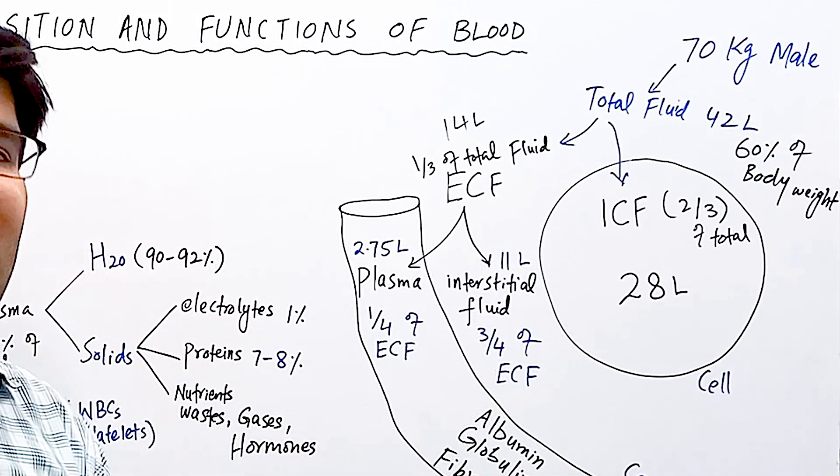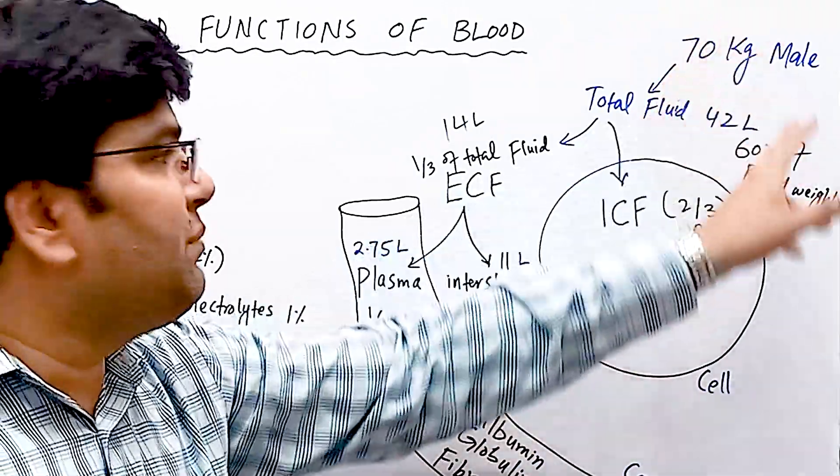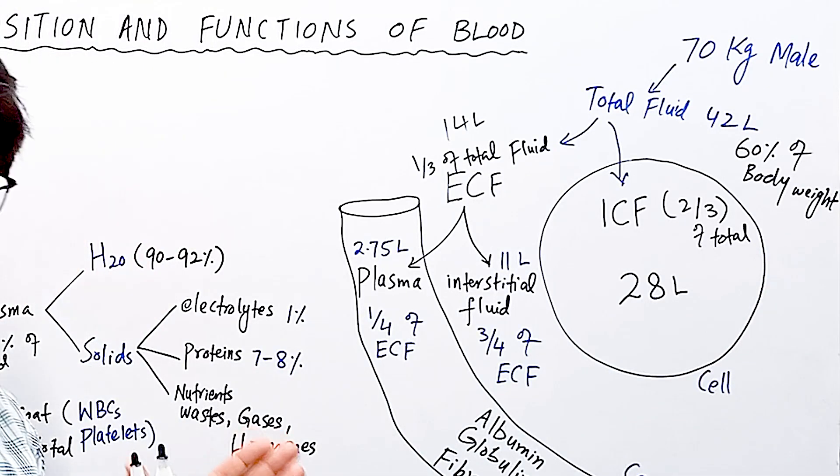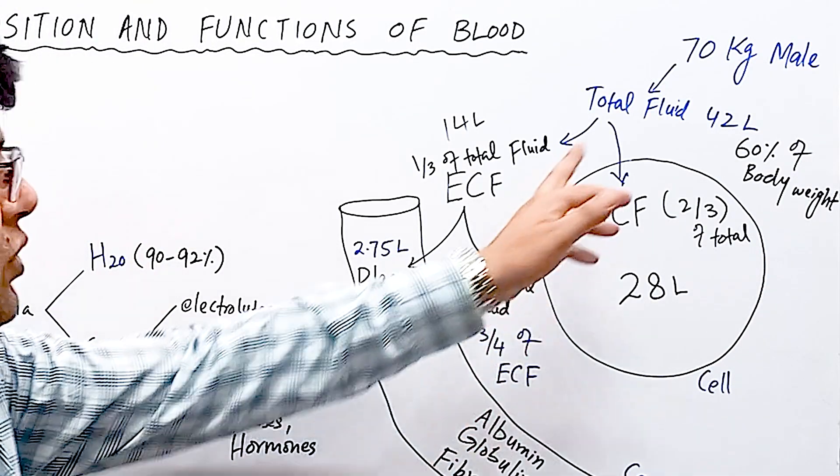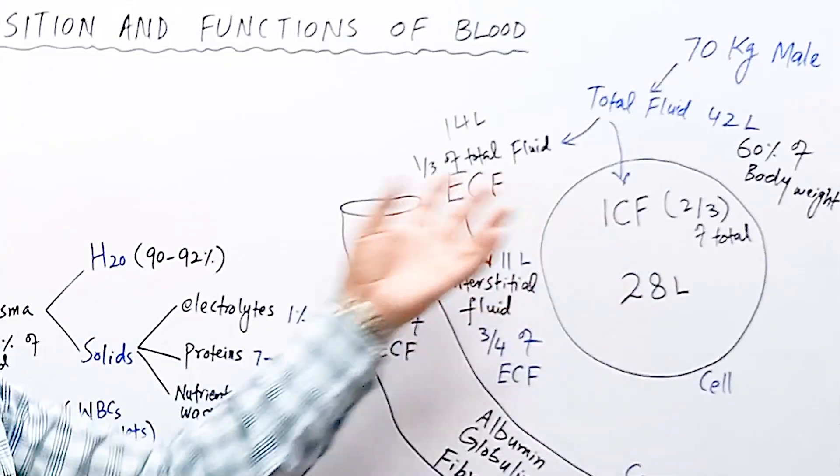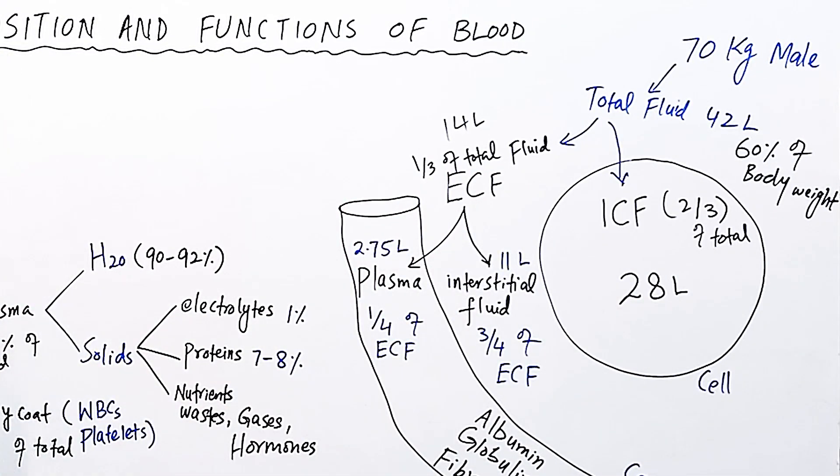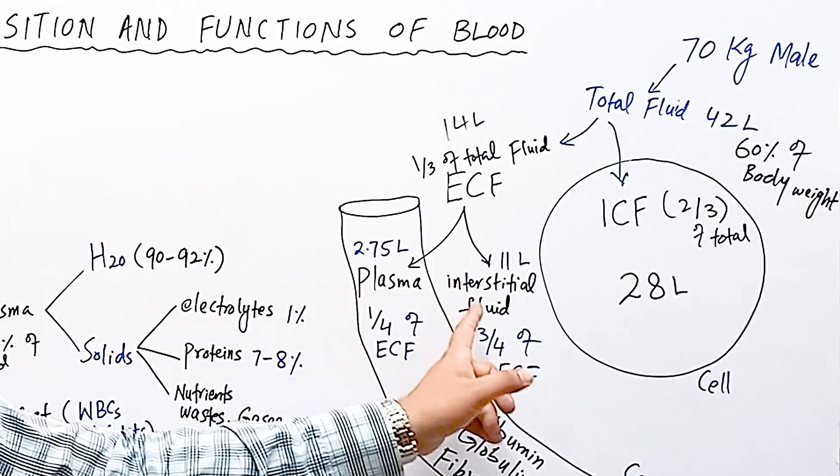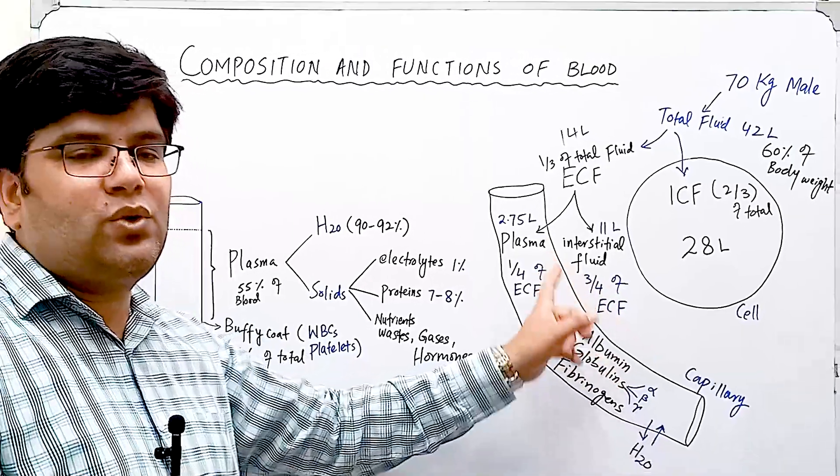I hope now you have a big picture how much of total body weight is made by total body fluid and what are the two main compartments: intracellular and extracellular. What are their proportional sizes and what are two sub-compartments of extracellular fluid, which are interstitial compartment and plasma, with interstitial compartment being bigger compared to plasma.